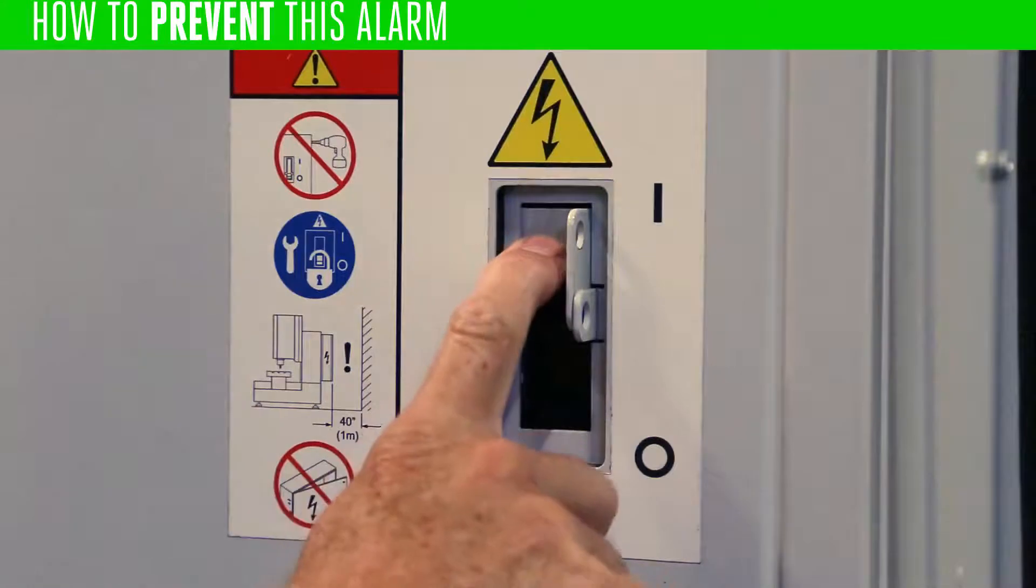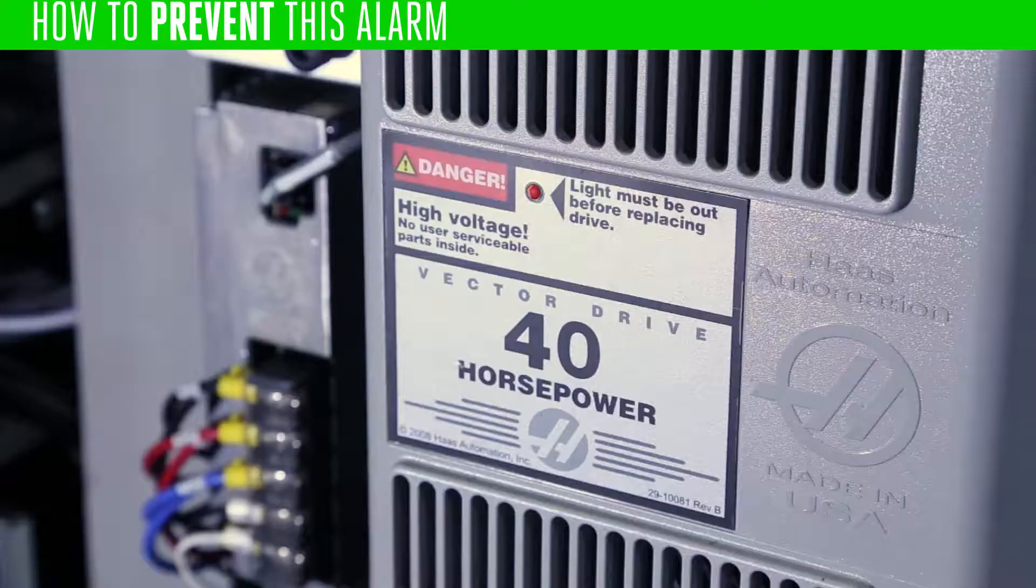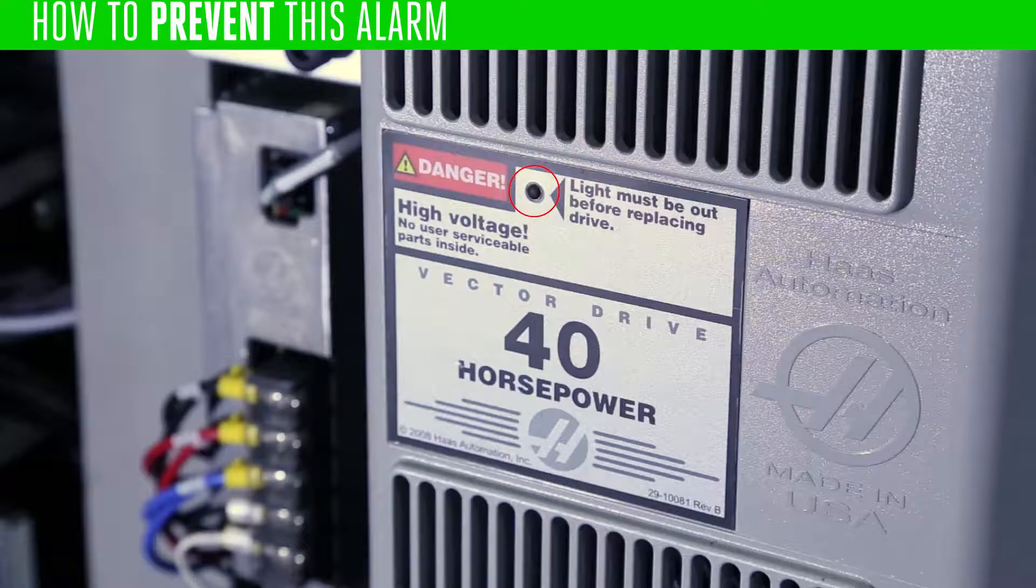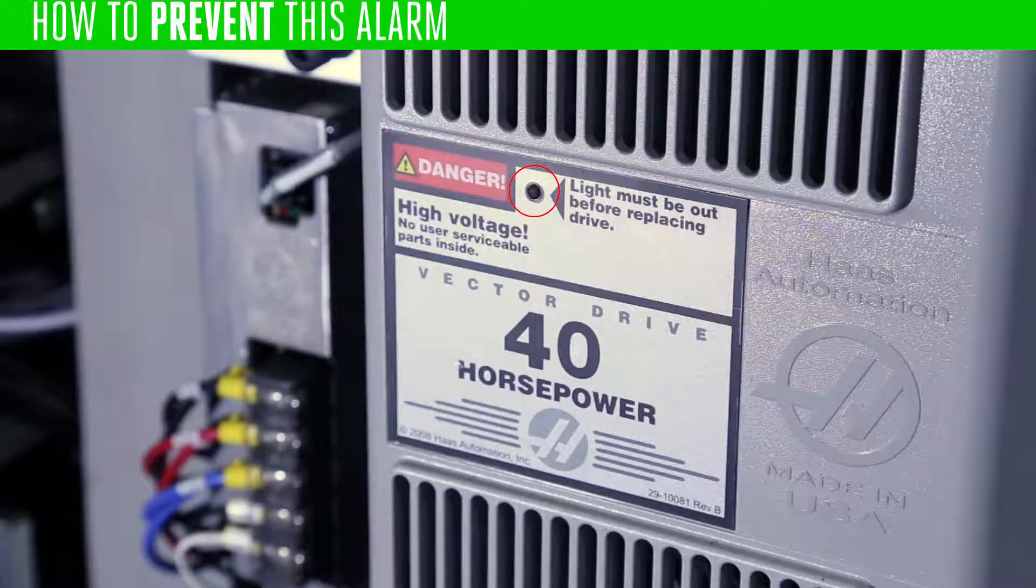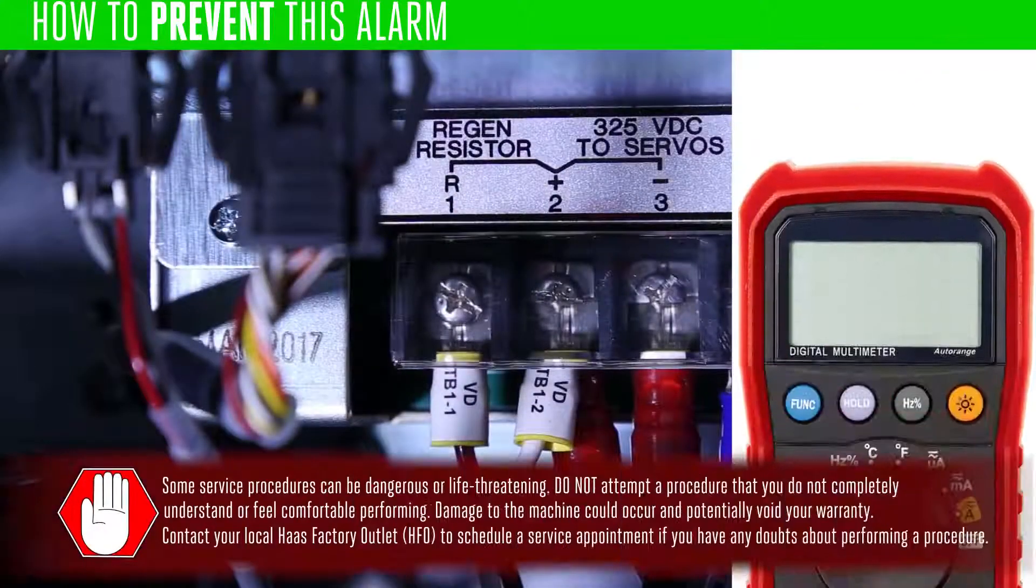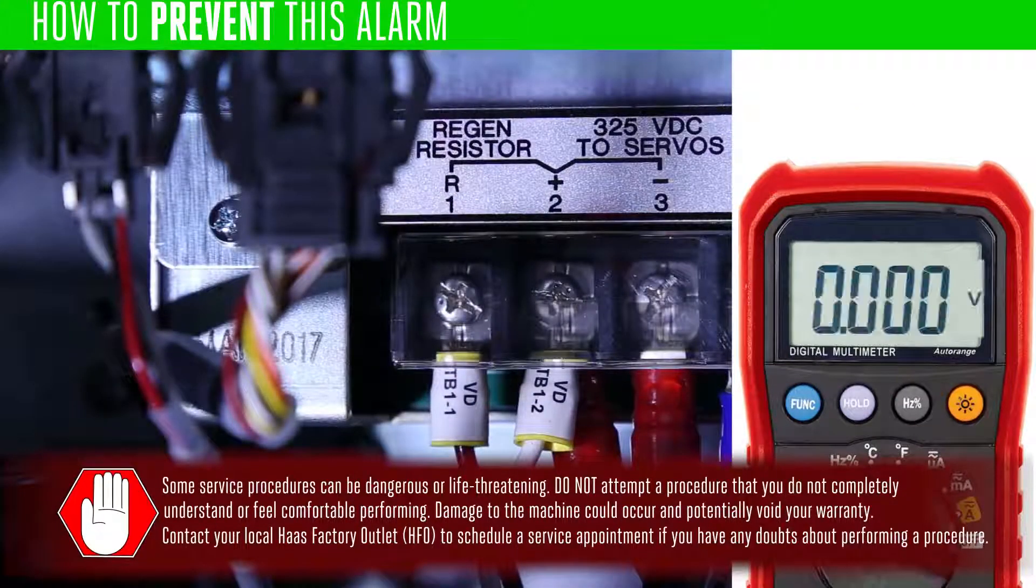Before you start, set the main circuit breaker to the off position and wait until the red LED on the vector drive goes out. If the LED is still on, there may be a lethal level of voltage on the vector drive DC bus. Before you perform any operation, make sure the LED has gone out completely.